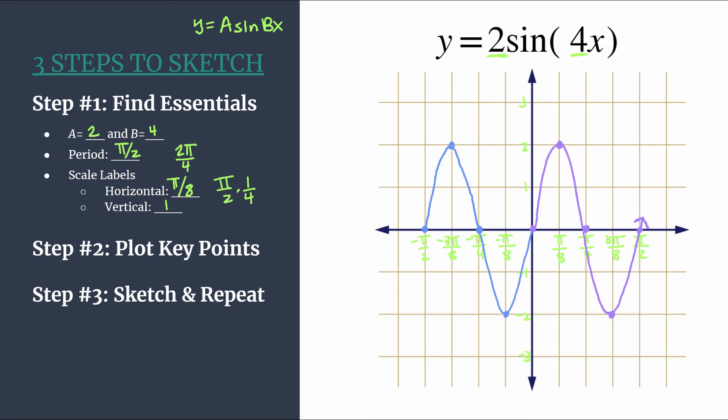And hopefully you're seeing as we graph this second cycle, how our scale label for the horizontal axis was very intentional in how all these key points align. So it is a nice, neat graph. So that's how you use the three steps to sketch method to graph y equals 2 sine of 4x.